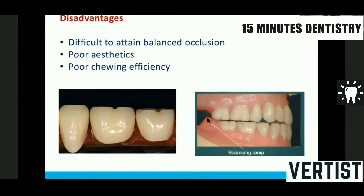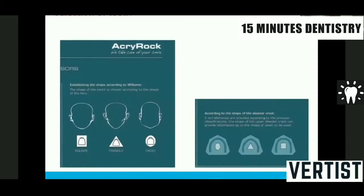When doing balancing with non-anatomic teeth, we use something called a balancing ramp which helps in getting tripodal contact. As a disclaimer, we don't promote any brand, but Acry Rock is widely used among most dental colleges. Anterior teeth selection is based on the shape of the face: a square face gets square-type teeth, a tapered face gets tapered teeth, and a wide face gets wide teeth. It also depends on arch form: wide arch gets wide teeth, tapered arch gets tapered teeth, and squarish arch gets square teeth.